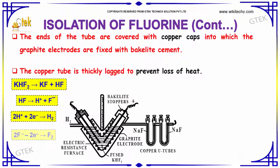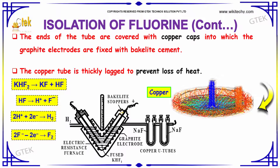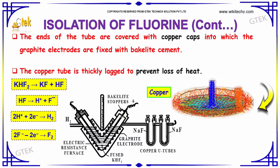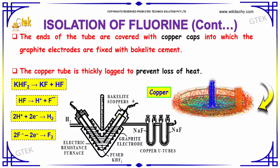The ends of the tube are covered with copper caps into which the graphite electrodes are fixed with a Bakelite cement. The copper tube is thickly lagged to prevent loss of heat.